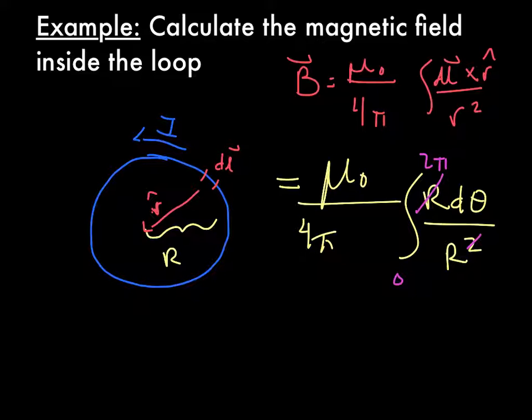And you get the magnetic field, oops, forgot the I there, magnetic field due to a current loop in the wire, mu naught I over, no, integrated 0 to 2 pi, that gives you 2 R. Ta-da, now we need to find the direction.